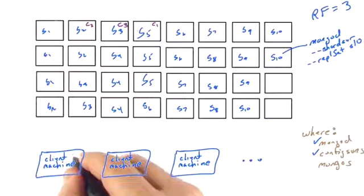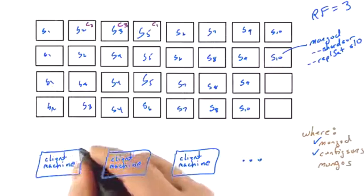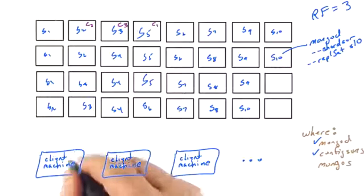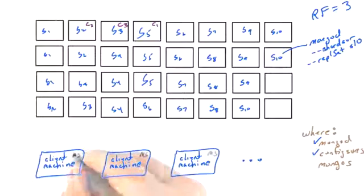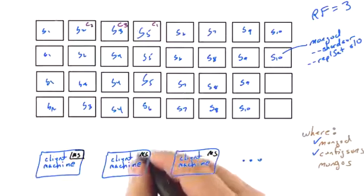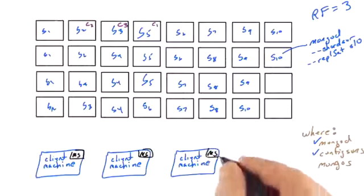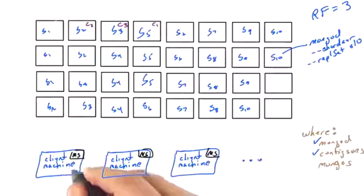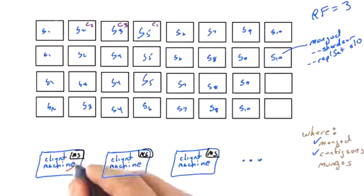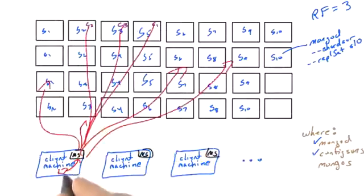One option is to put them on the client machine. So I could put a MongoS, and I will call it MS, on each of these. And then what can happen is that the client app on this machine would just talk to the local MongoS, which would then reach out and talk to the whole cluster. So this client to MongoS traffic would then be over the local host interface here, if you will. So that's one option.